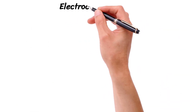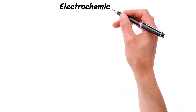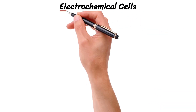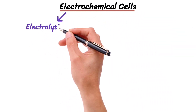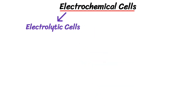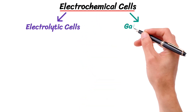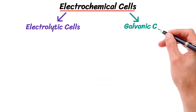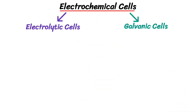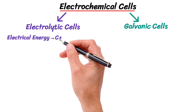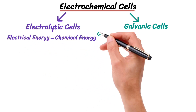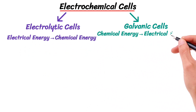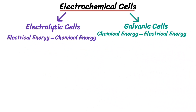Redox reactions occur in special types of devices known as electrochemical cells. There are two types of electrochemical cells: the electrolytic cell and the galvanic cell. The electrolytic cell converts electrical energy into chemical energy, while the galvanic cell converts chemical energy into electrical energy.